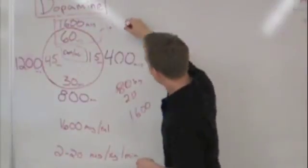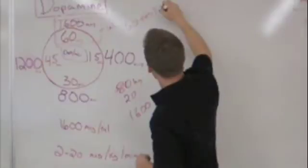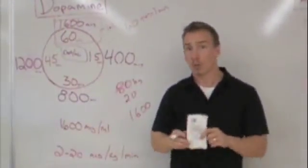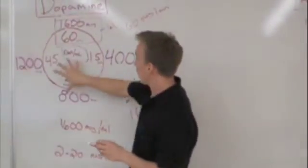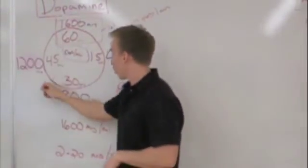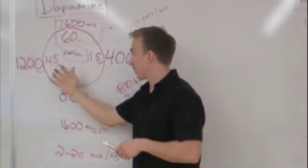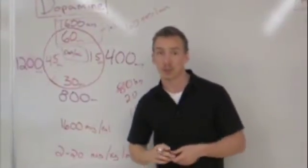So 60 drops per minute or roughly one a second on this administration set will give us the desired dose. Now, if our dose falls somewhere else in this clock or say in between two numbers here, simply split and give your best estimate of the distance. It is an estimate, but remember in most of these cases, we're estimating the patient's weight.